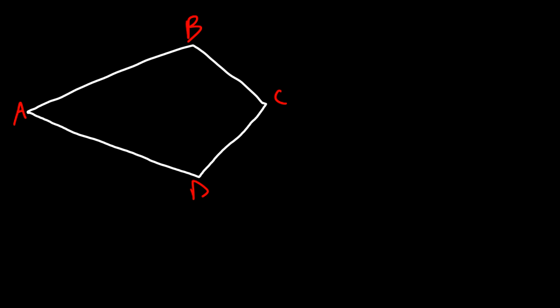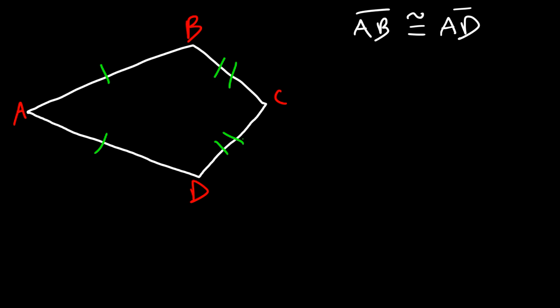The next shape we need to talk about is the kite. Let's label it A, B, C, and D. The first thing you need to know is that AB and AD are congruent. Next, BC and DC are congruent as well.